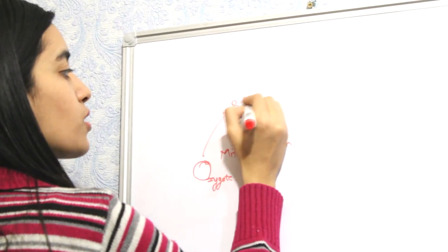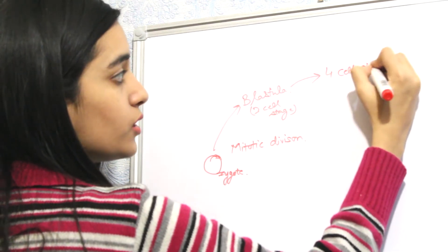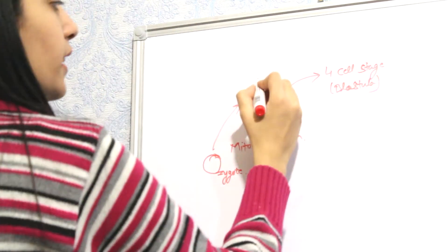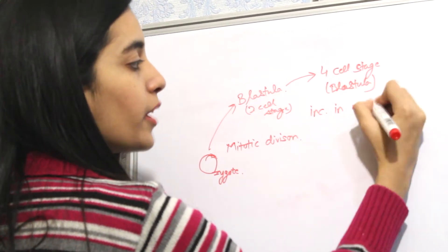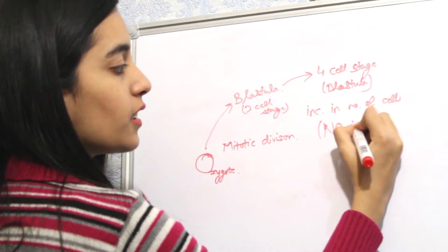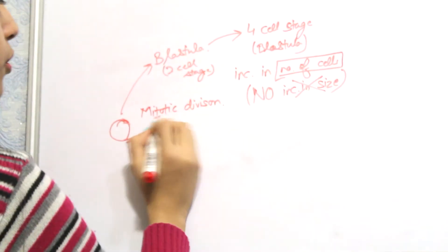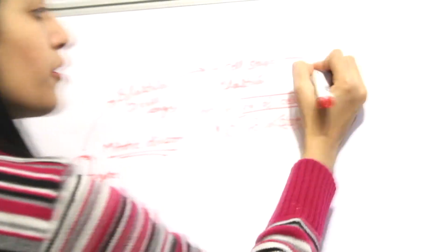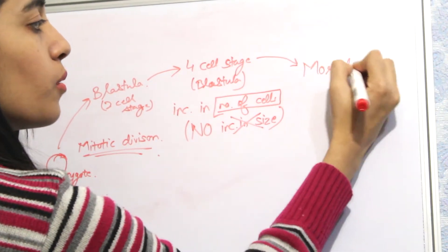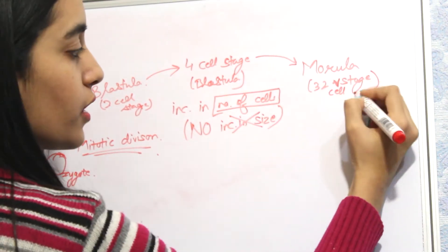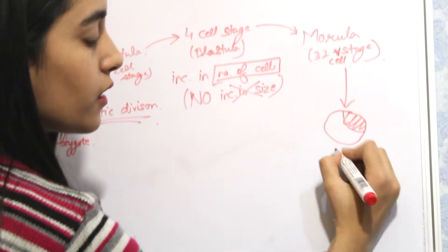Through mitotic division, the zygote first forms a two-cell stage, then a four-cell stage — both referred to as blastula. There is an increase in the number of cells but no increase in size. After consequent divisions, a 32-cell structure called morula is formed. When the morula forms a fluid-filled cavity inside it, the structure is called a blastocyst.